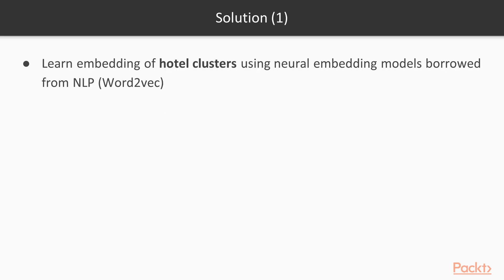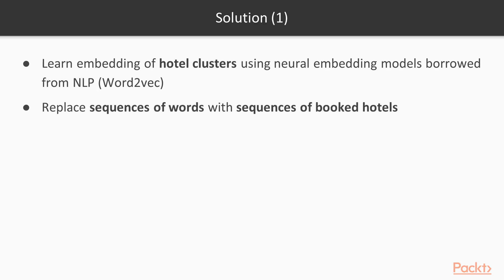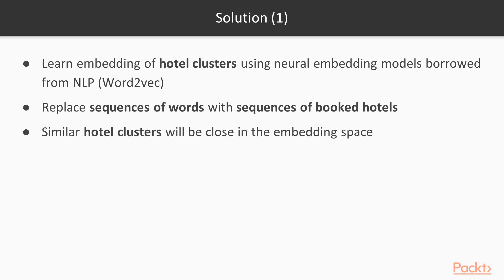The idea is to use a Word2Vec model. It's an embedding model borrowed from NLP and used to learn embeddings of hotel clusters. So we're going to replace sequences of words with sequences of booked hotels, and similar hotel clusters will be close in the embedding space.